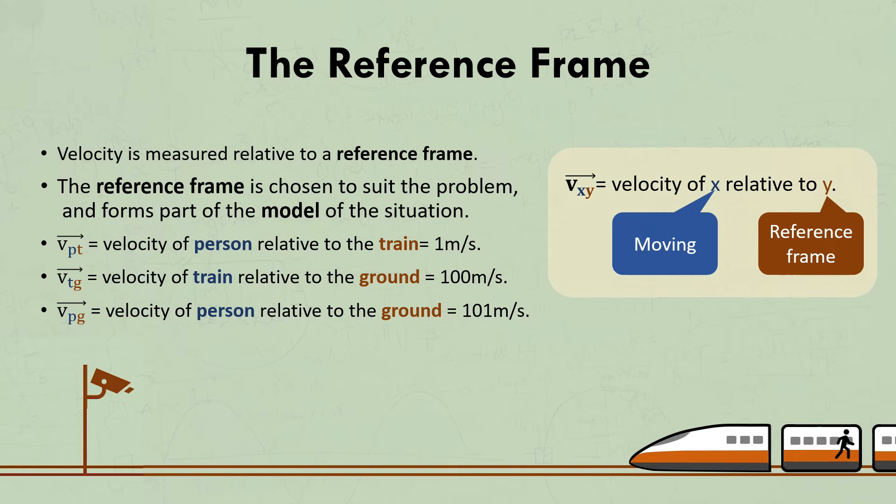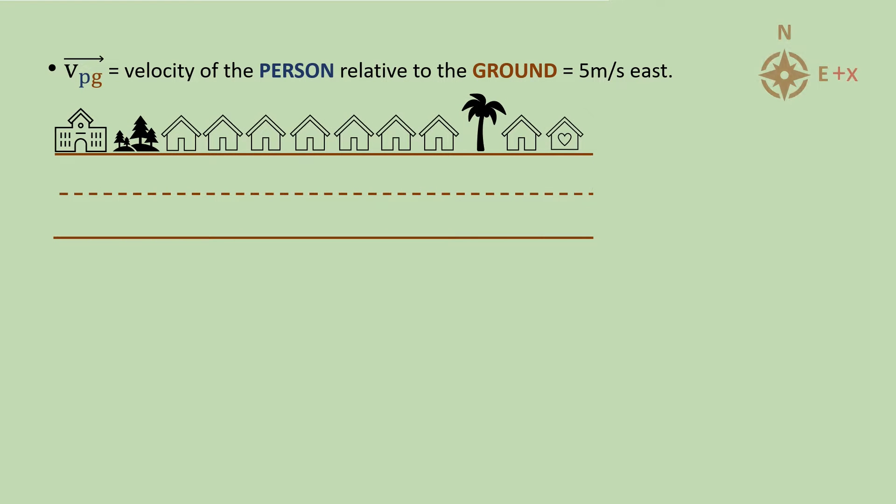Now in that case the math was obvious, but the key idea here is that we can add relative velocities from different reference frames as vectors, and we'll do a harder two-dimensional example soon. But first let's explore the reference frame in a bit more detail.